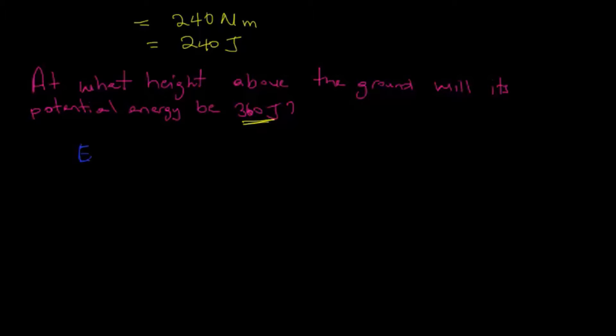Now we want to find the height. Height is the unknown in this case. So again, mass is 6 kilograms, gravity is 10 newtons per kg, and our energy is equal to 360 joules.